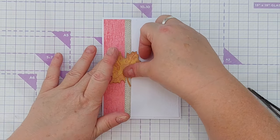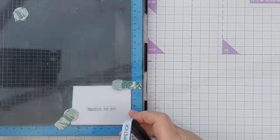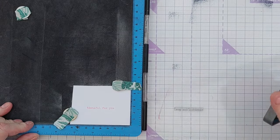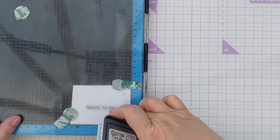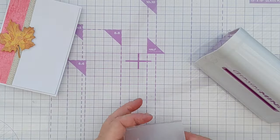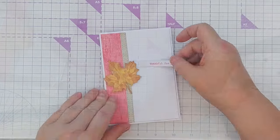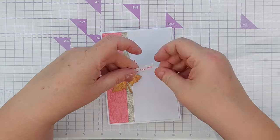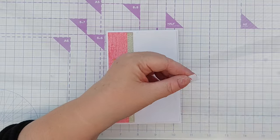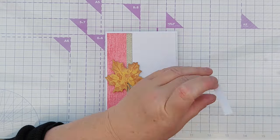For my sentiment, I stamped thankful for you using worn lipstick again—this is the darker of the two pinks. I then die-cut this out with the stitched fishtail banner. It was obviously too long, but that didn't matter because I wanted to tuck one end of it underneath my leaf. So I snipped that down so it was exactly the right length, put some glue on the back, and then snuggled it in to the right-hand side of the leaf, roughly around the middle of the card.